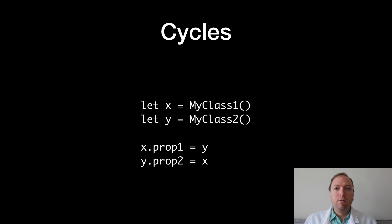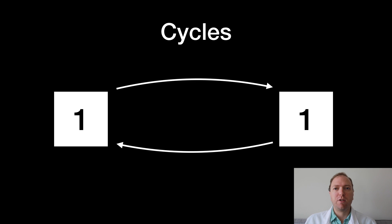This code example shows a cycle. It creates two objects and then it sets a property on each object to point to the other one. If you look at this in memory, you get a situation that looks something like this. So you have two objects referring to each other.